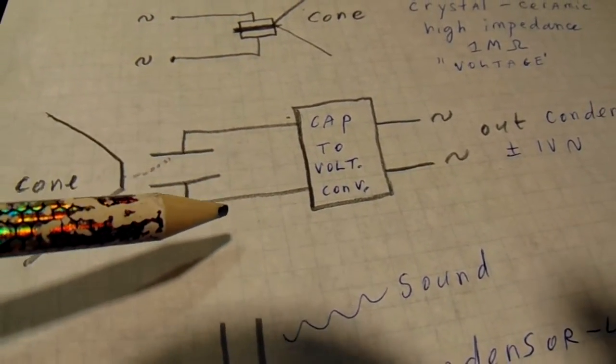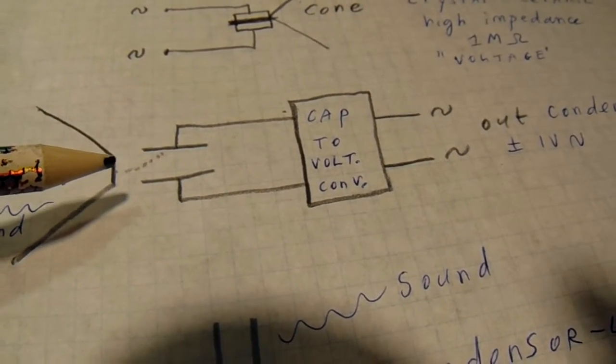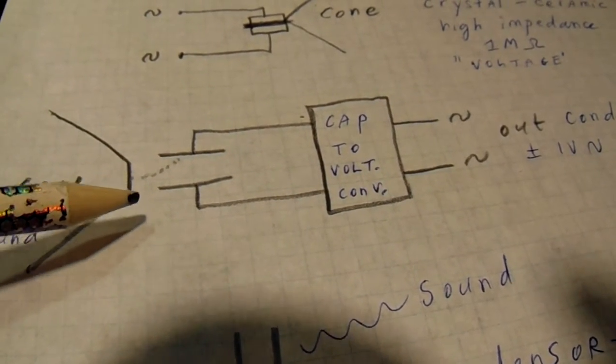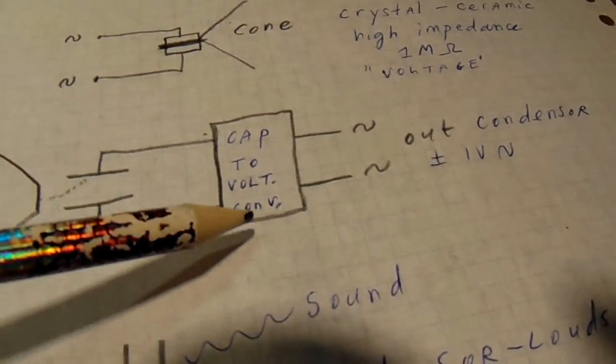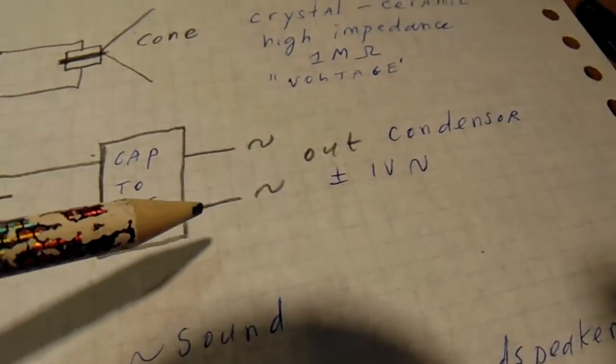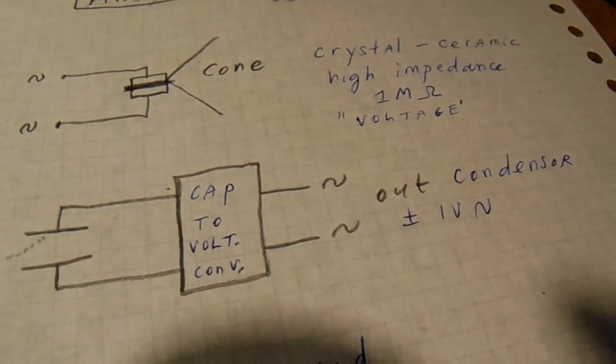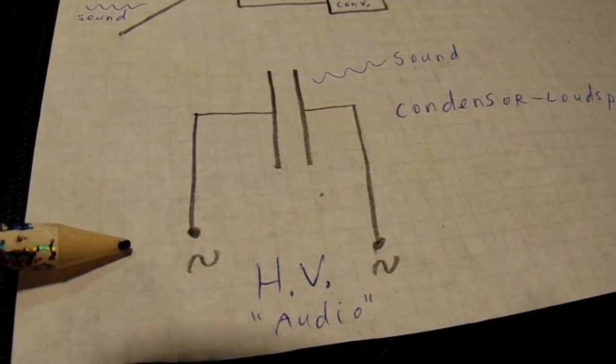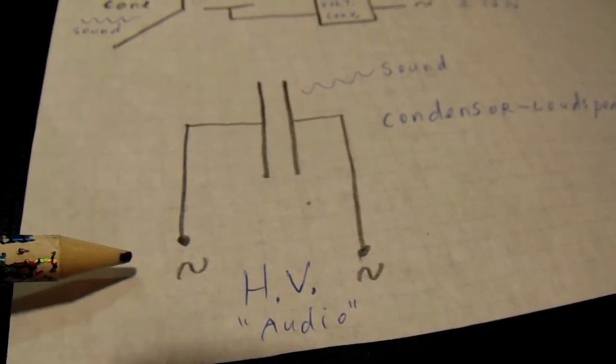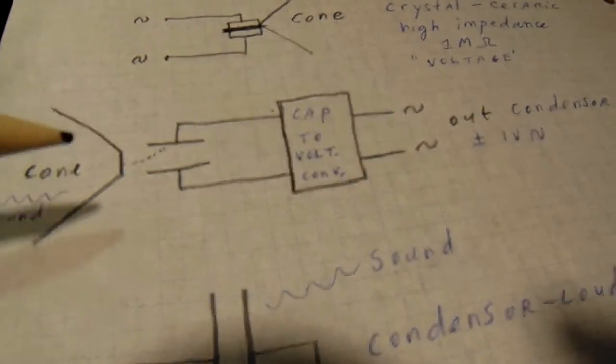One of the plates from the capacitor starts to move. That has the effect of a changing capacitance, and that changing capacitance is translated by an electronic circuit to sound. Very simple. And in fact, the opposite from the condenser electrostatic loudspeaker. They act according to the same principles.